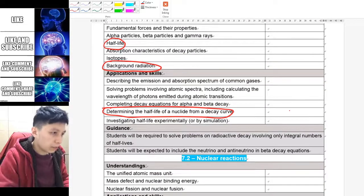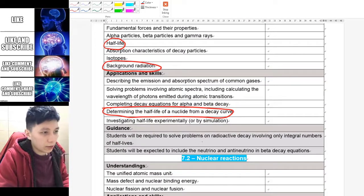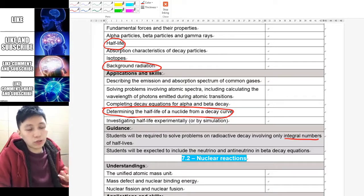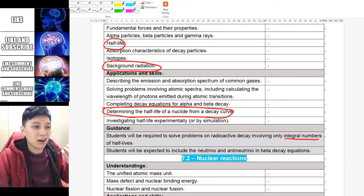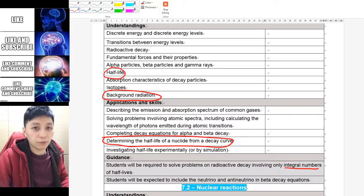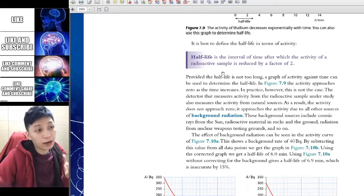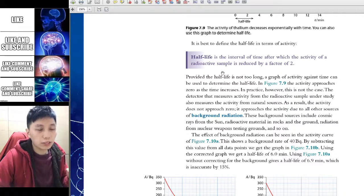They also specify that you only will be required to solve problems on radioactive decay using integral numbers only. So don't worry you won't be asked to solve algebraically on a problem. That only will be asked in the H2 topic. Here's a definition of the half-life which you may want to copy to your booklet in case they ask you.